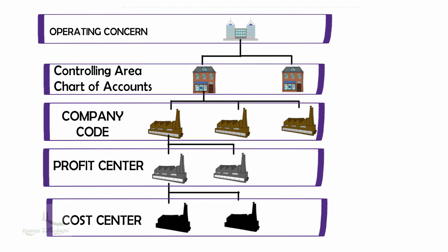Under the controlling area, we will have the company code. We can assign more than one company code to a controlling area based on requirements. Company code is the smallest organizational unit in the financial accounting module for which we draw financial reports for external reporting purposes. This is one of the most important parts of Enterprise Structure, as the company code is assigned to most other modules for integration. Under the company code, we have Profit Center and Cost Center, which help the company to allocate costs.